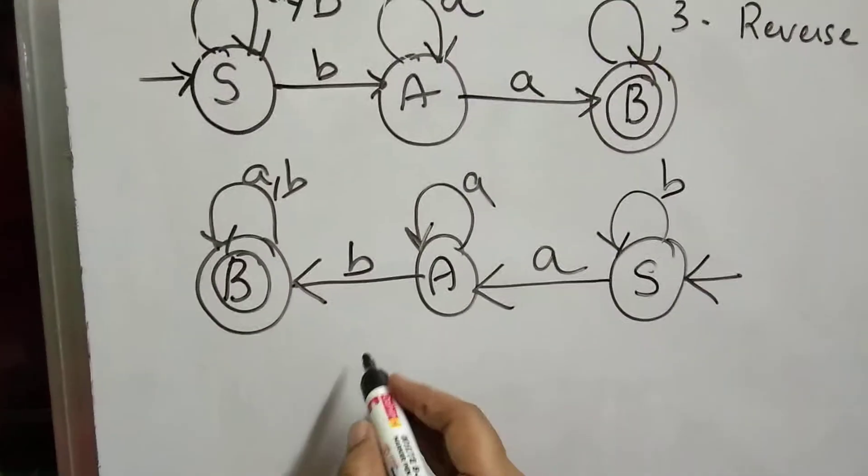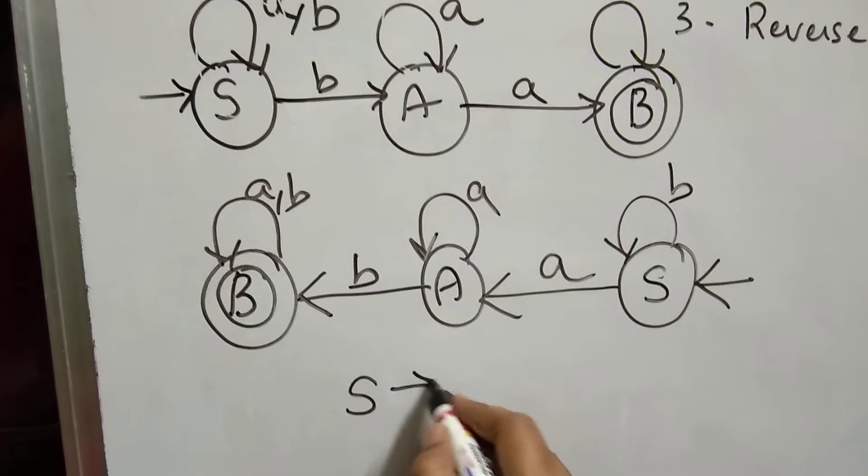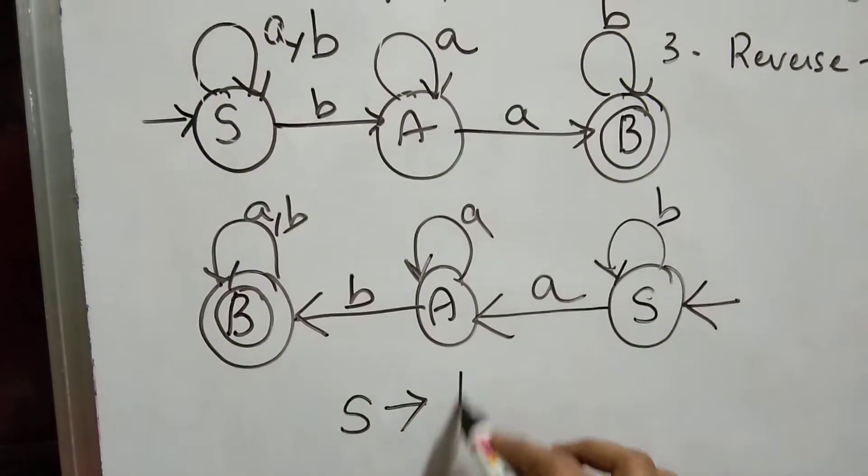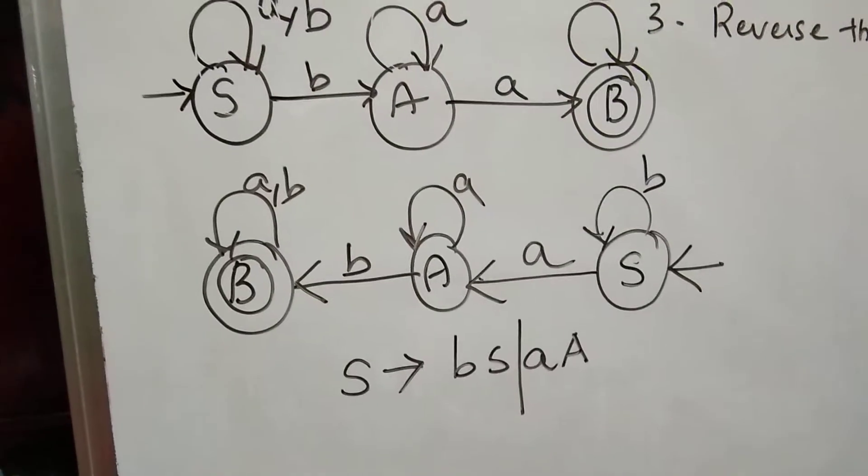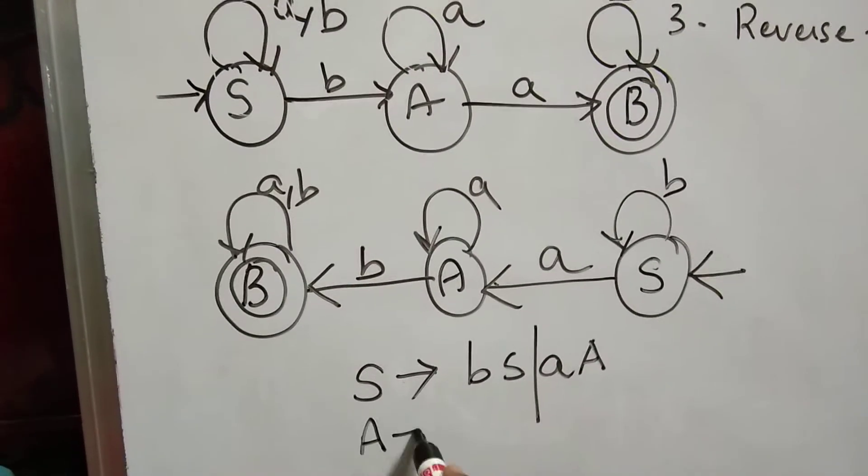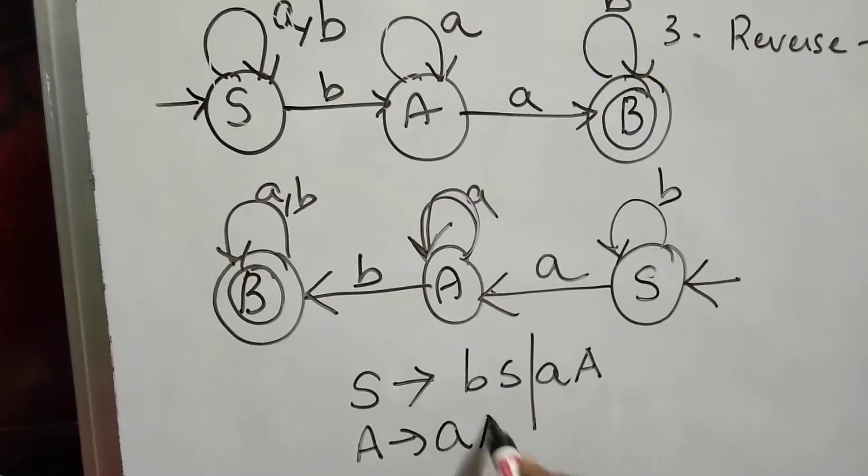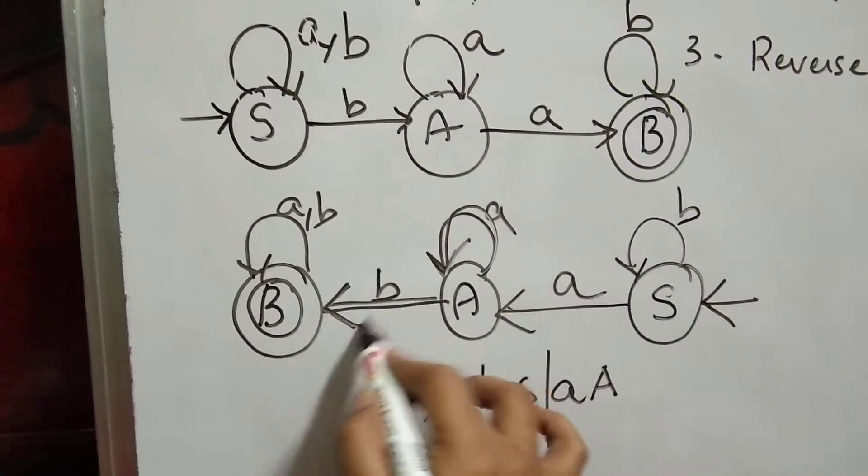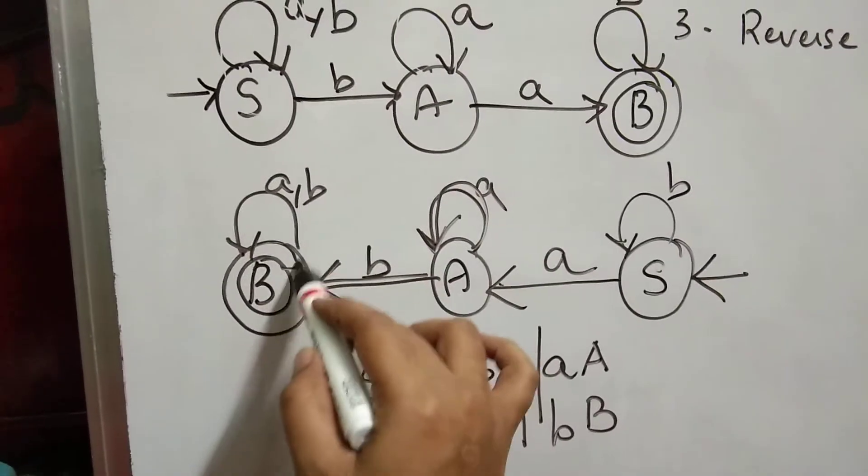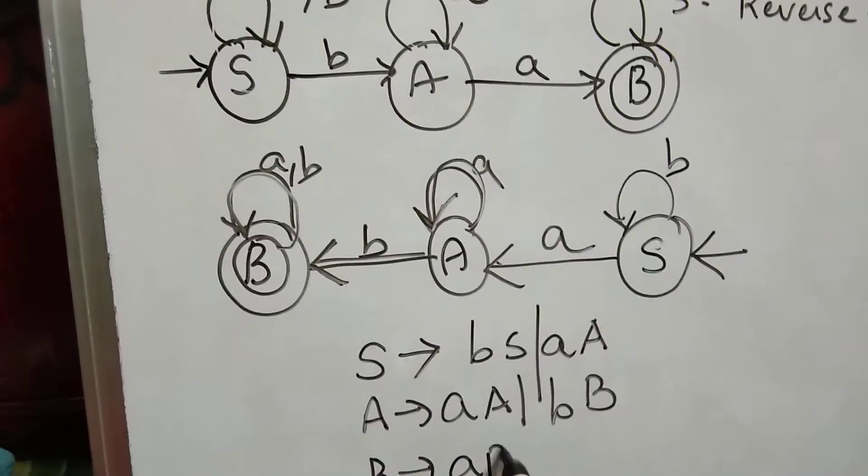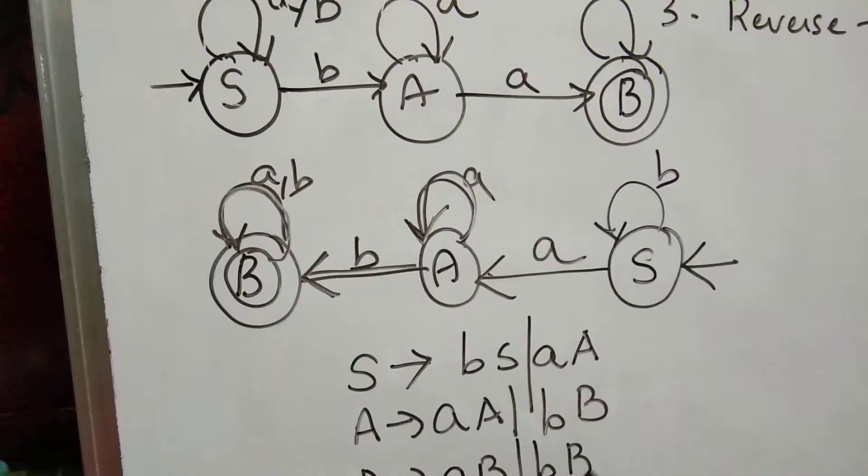Now we can derive the grammar. S tends to BS or AE. Next, A tends to AA or BA. B tends to AB or BB or epsilon.